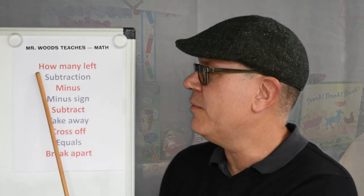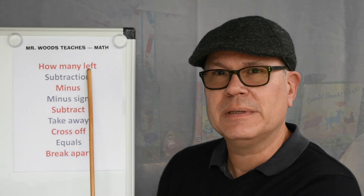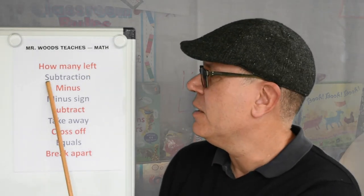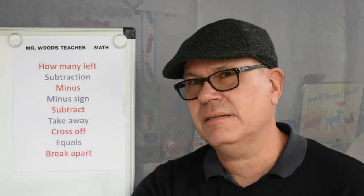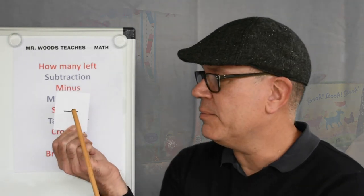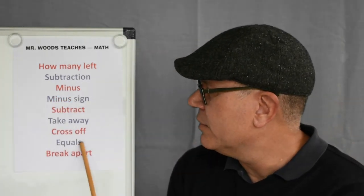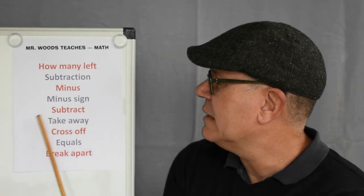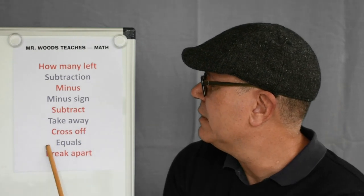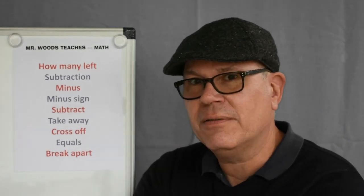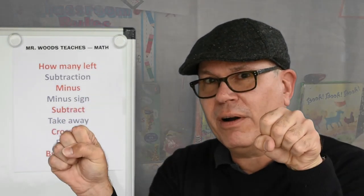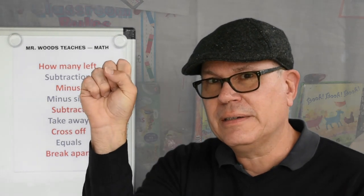Let's take a look here. There's some vocabulary that says how many left. So if I take something away from a group, how many do I have left? Here's the word subtraction. You know what sign is for a number sentence? There it is. That's a subtraction sign. That's different from the equals sign, and there's the word equals. We have minus sign, subtract, take away, cross off, equals, or break apart. So if I have three things here and two things here, and I break it apart, how many do I have over here? So those are the types of things we're going to be working on with subtraction.